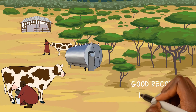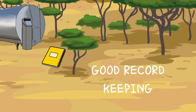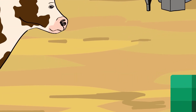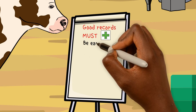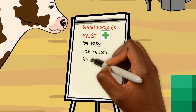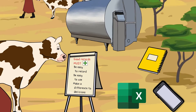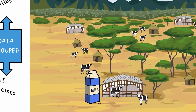Only if there is good record keeping can any investigation be undertaken. Records can be kept in books, on spreadsheets, or on apps or software. The information that is recorded needs to be discussed and driven by the farmer. It must be easy to record, easy to use, and make a difference to decisions. Good records can guide decisions on how to manage your cows, measure the productivity of the cows, and decisions on culling and selection.